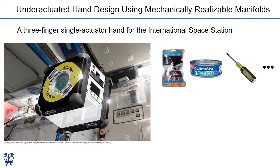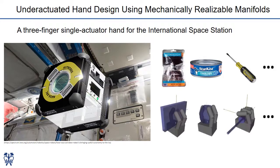For a hand with three fingers and eight joints, we used the GraspIt! simulator to generate suitable grasps. We then applied our optimization method to derive the underactuation parameters.